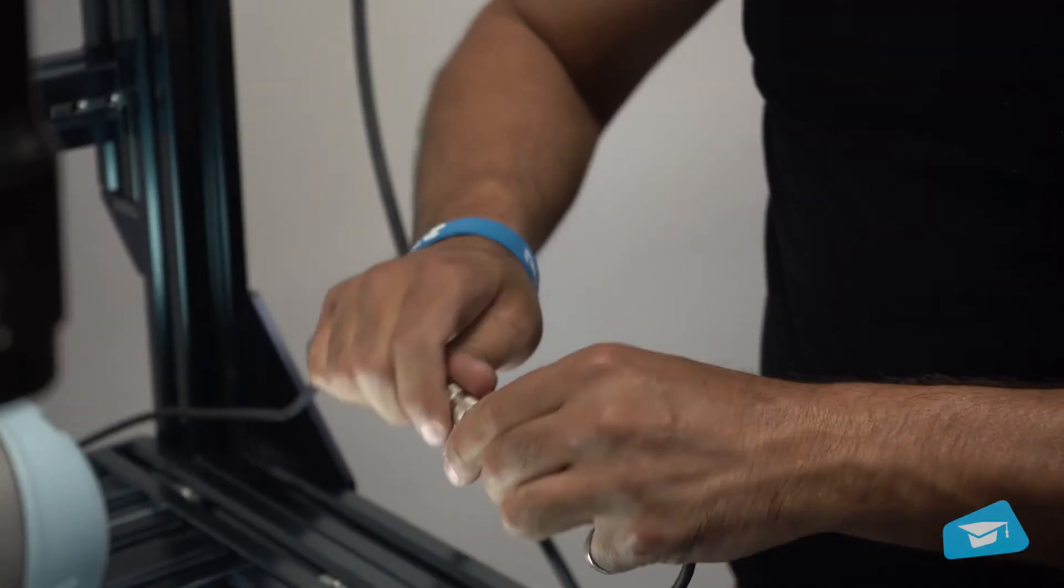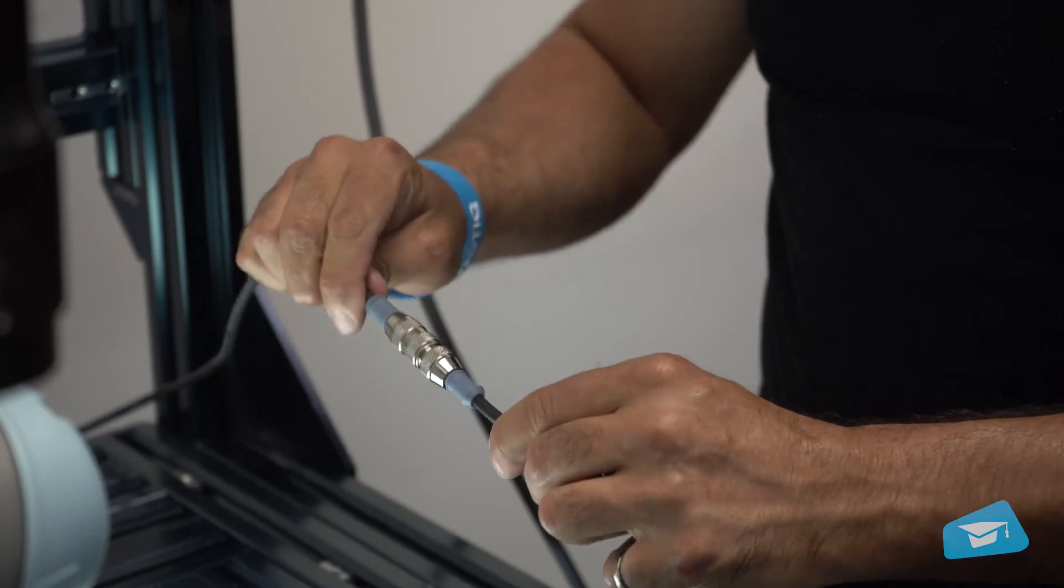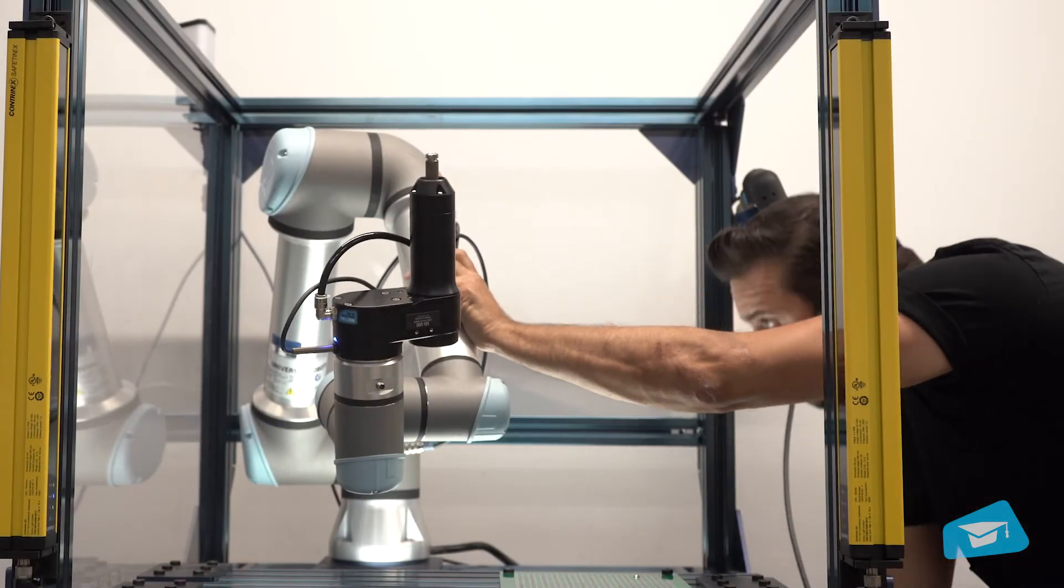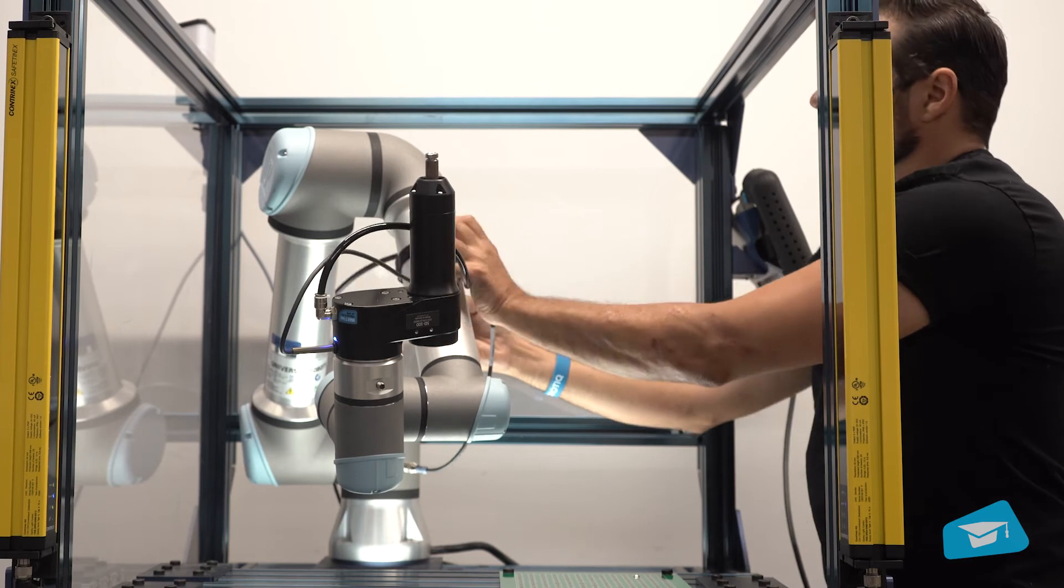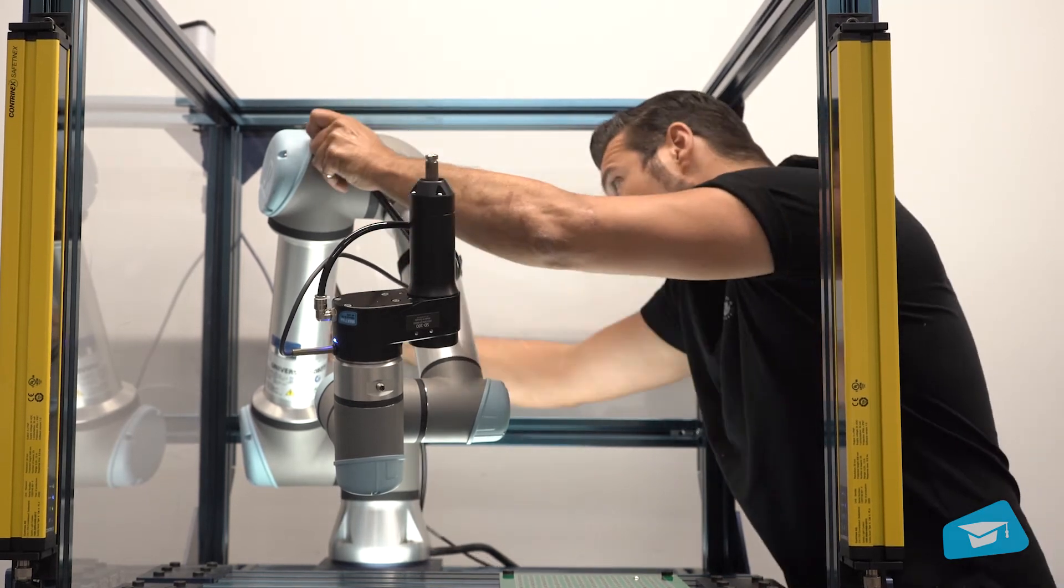Connect the coupling cable to the provided Hi-Flex cable. Run the cable and the pneumatic hose along the robot arm and secure using a cable routing system.